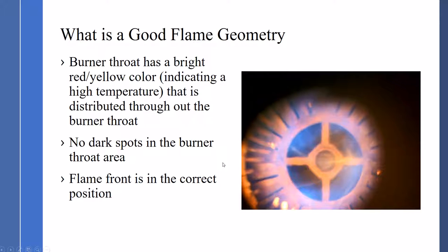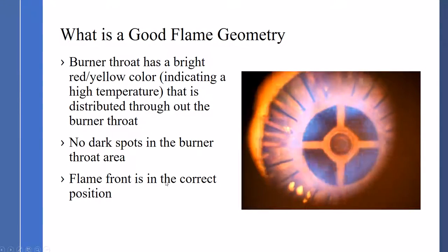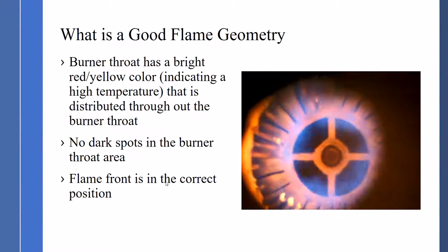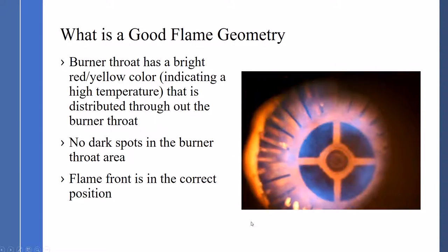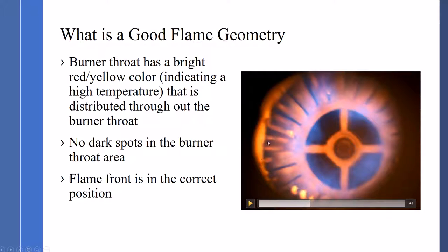It has a bright yellow color, indicating a high temperature that is distributed throughout the burner throat. There should be no dark spots in the burner throat. The flame front is in the correct position. Therefore, we are looking for a bright yellow color throughout this burner area.